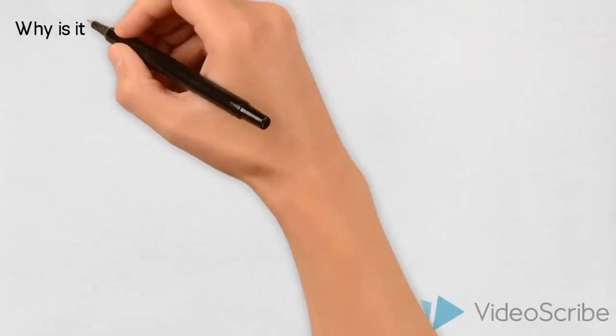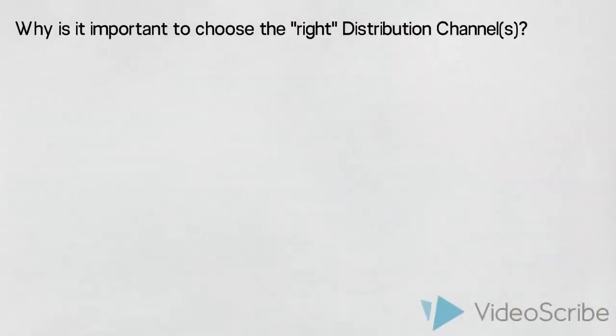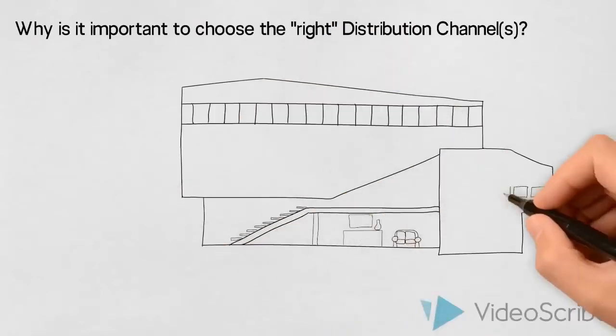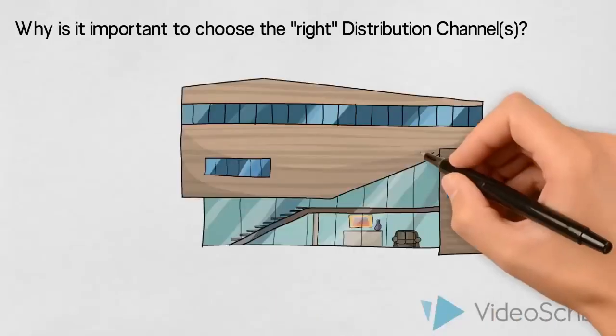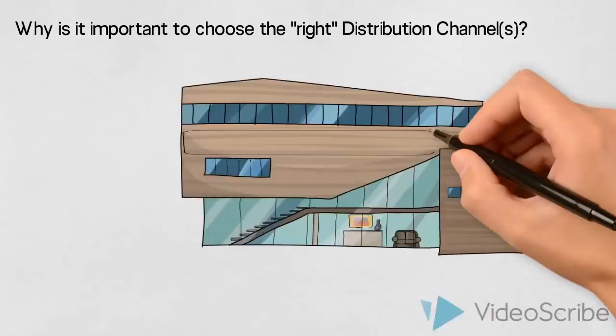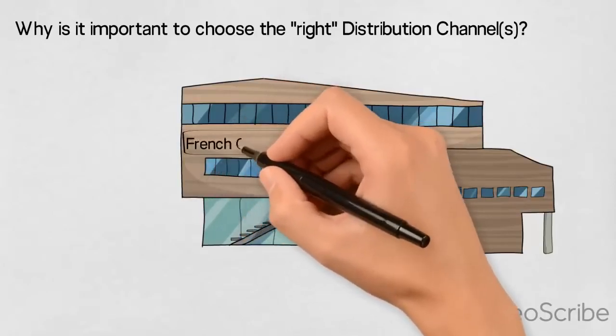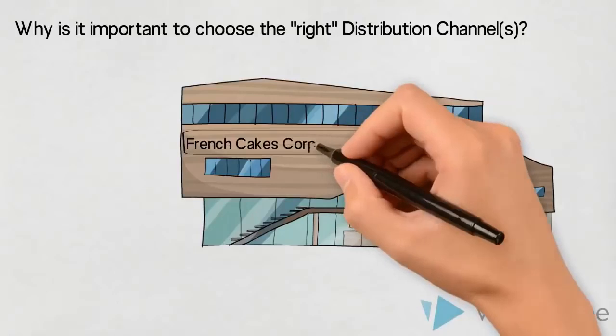So why is it important to make sure we choose the right distribution channels? Let us use an example. This business produces French cakes and desserts. In these modern production facilities, well-educated confectioners develop recipes and create delicious cakes and desserts ready to be sold and distributed to cake-loving customers.